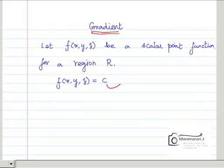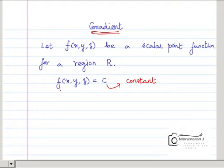Here c is a constant. Then it becomes a surface where z is the dependent variable and x and y are independent variables. So you can form some surfaces — if you are changing c, you will get a family of surfaces.